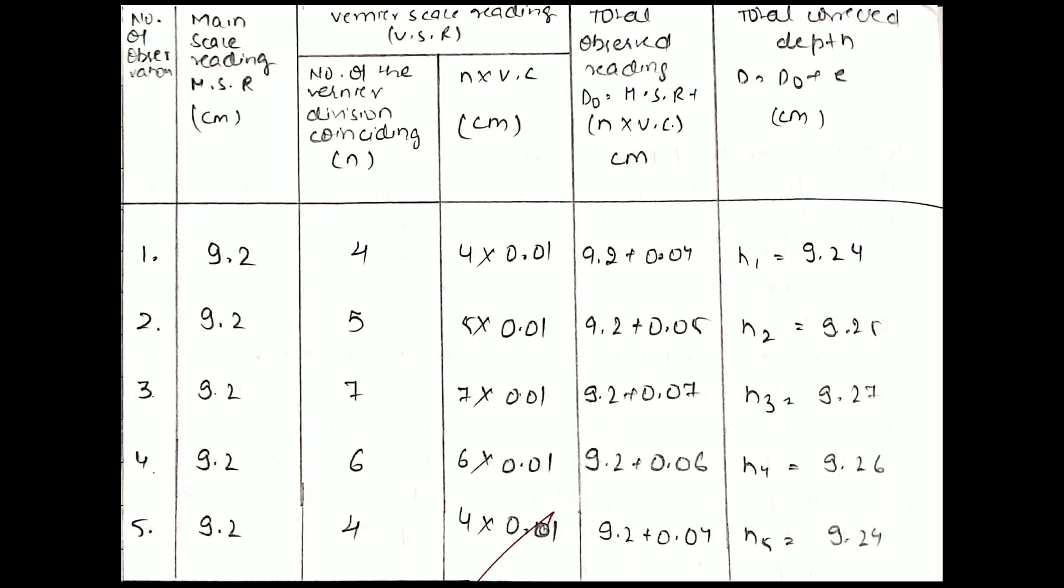If I take five readings of diameter then I should take five readings of height too. So I got five heights: h1 = 9.24 cm, h2 = 9.25 cm, h3 = 9.27 cm, h4 = 9.26 cm, h5 = 9.24 cm. Then again, like the calculation of the mean diameter, I do here the calculation of the mean height, which is the same as the calculation of the mean diameter.